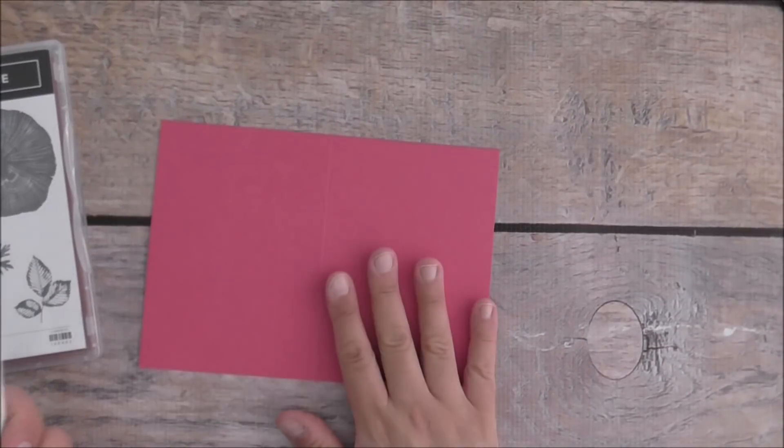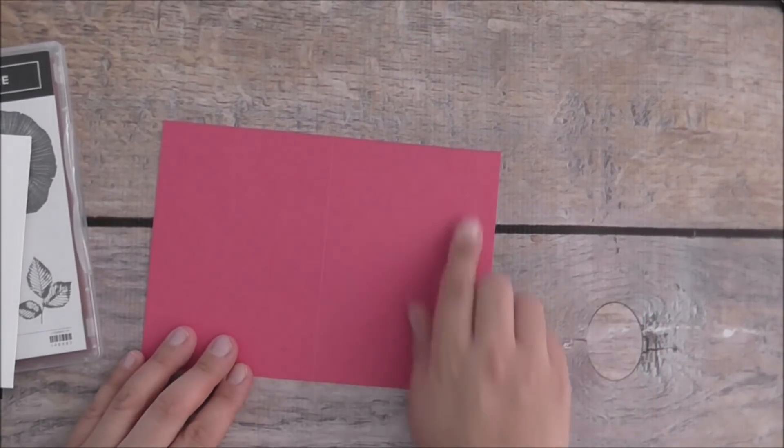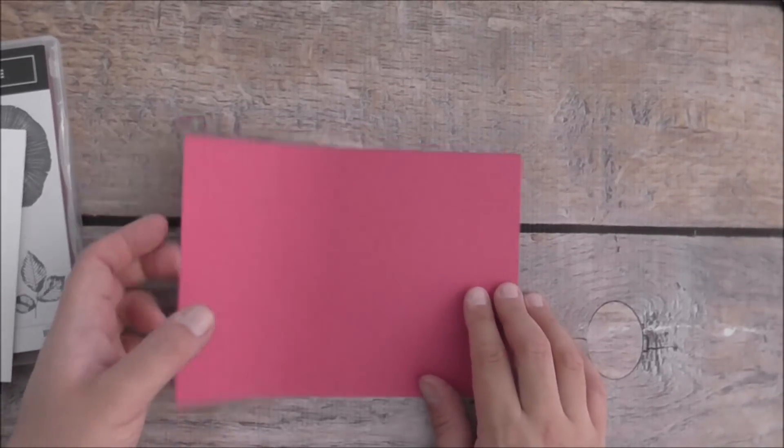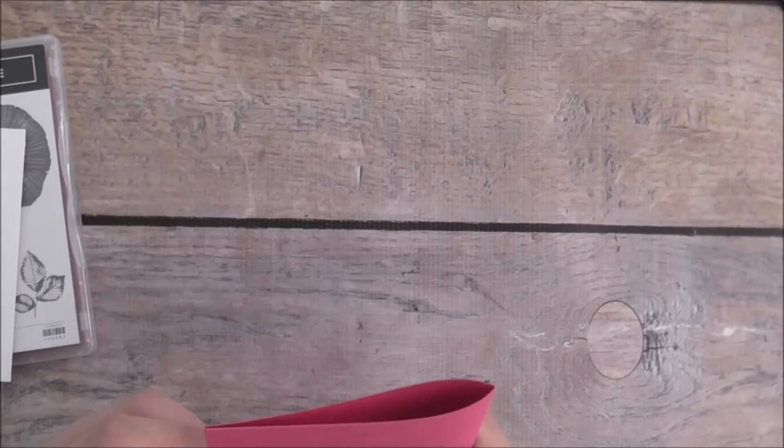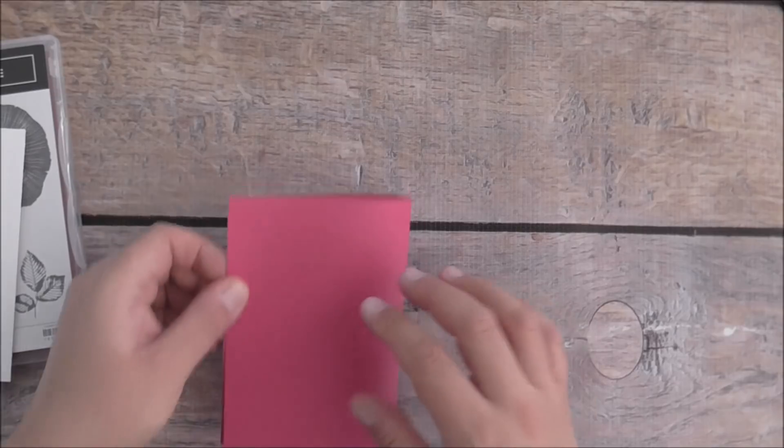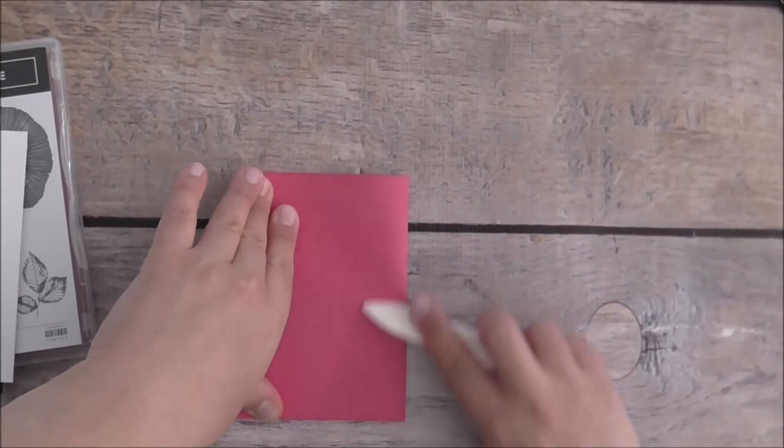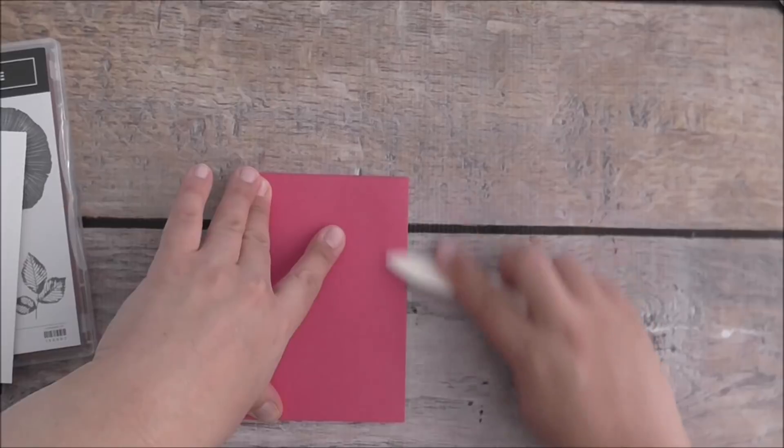For today's card I'm using half an A4 sheet scored in half again, making it an A6 card base. I'm just going to burnish the score line that I have already done.